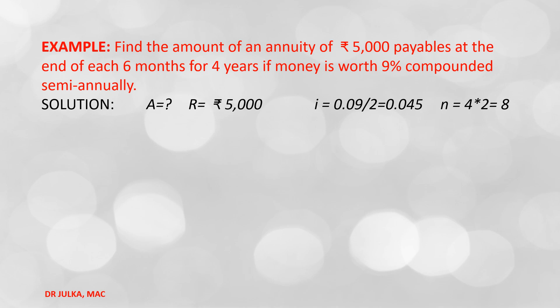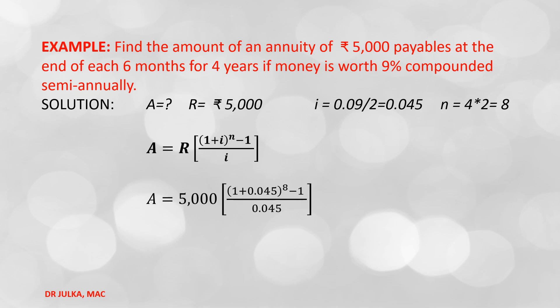Investment period is 4 years and payments are made at the end of every 6 months, so n = 4 × 2 = 8, and the future value amount is missing. In ordinary annuity, future value = R × [(1 + i)^n − 1] / i. Putting R = 5,000, i = 0.045, and n = 8, after solving we get A = Rs. 6,900 and 7 paisa.